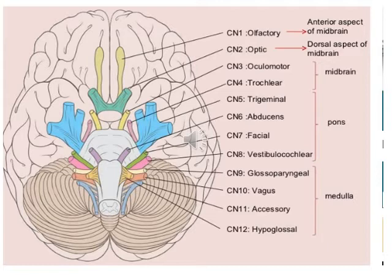As you see here in this picture, the nuclei of the first four cranial nerves are from the midbrain, the middle four cranial nerves from the pons, and the last four cranial nerves are from the medulla oblongata.